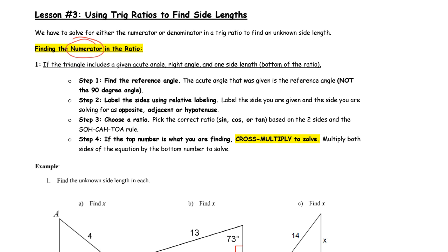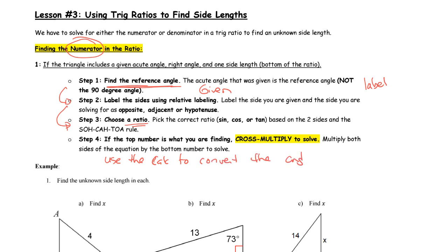The first thing we do is identify the reference angle, because that helps us with labeling. Labeling is important — it tells us which angle is significant, either the one we're looking for or the one we're given. The labeling helps us choose which ratio to use, whether it's sine, cosine, or tan. Then we use the calculator to convert the angle to a ratio, and cross multiply to solve.